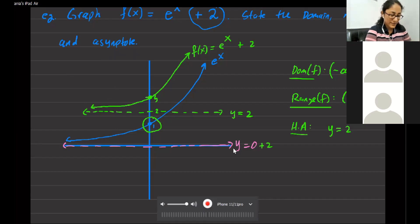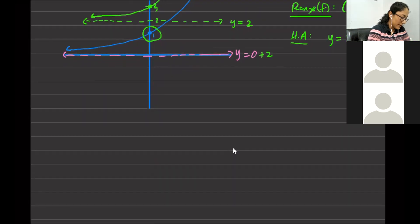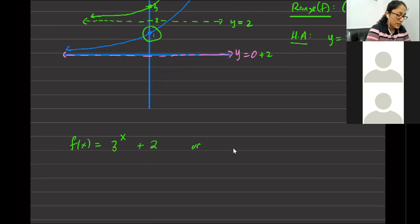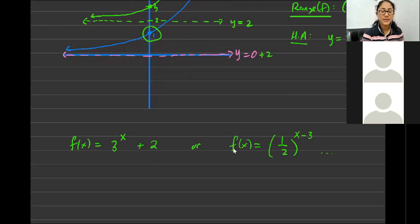We could have e to the x, or something like 3 to the x plus 2, or f of x equals one-half to the x minus 3, and so on. The idea is: once you know the basic shape for that particular base, you just apply transformations to it.